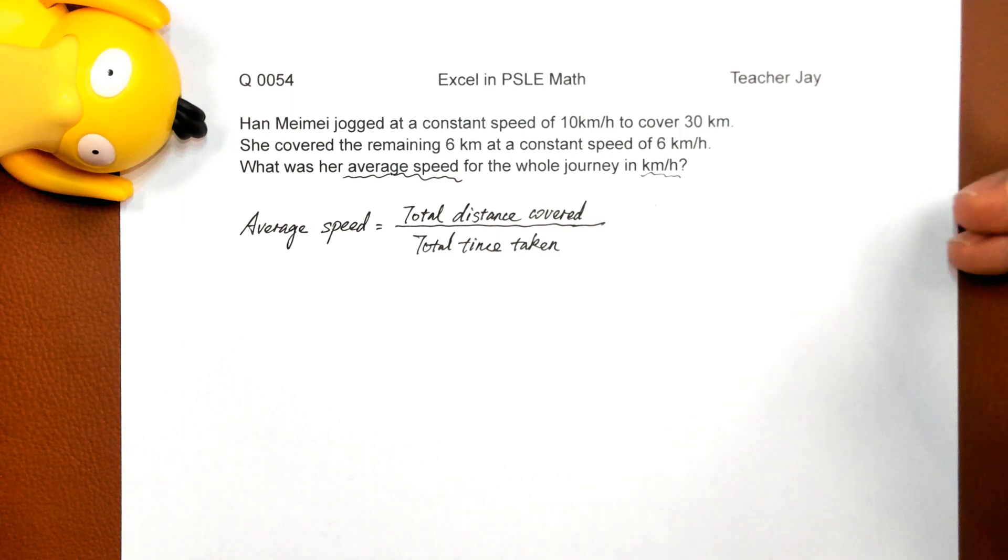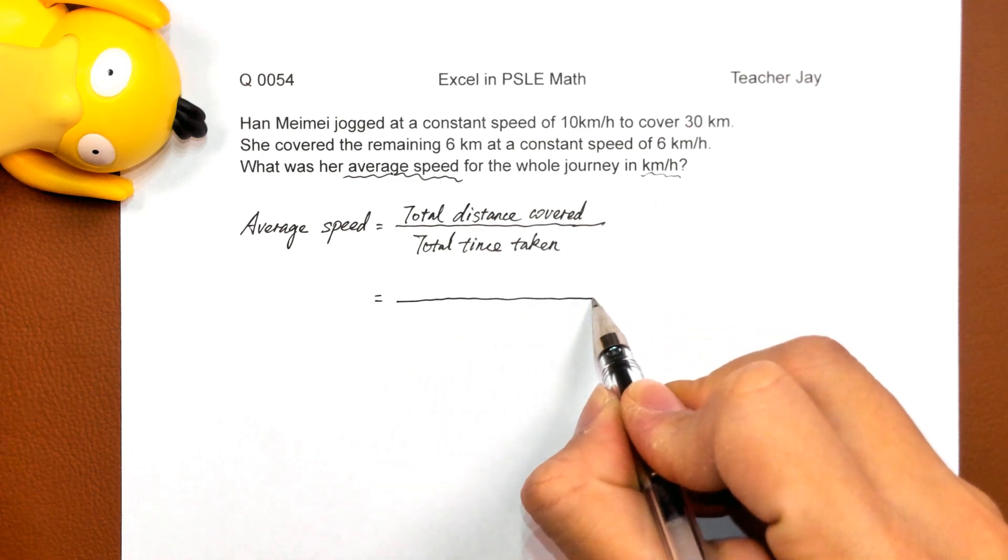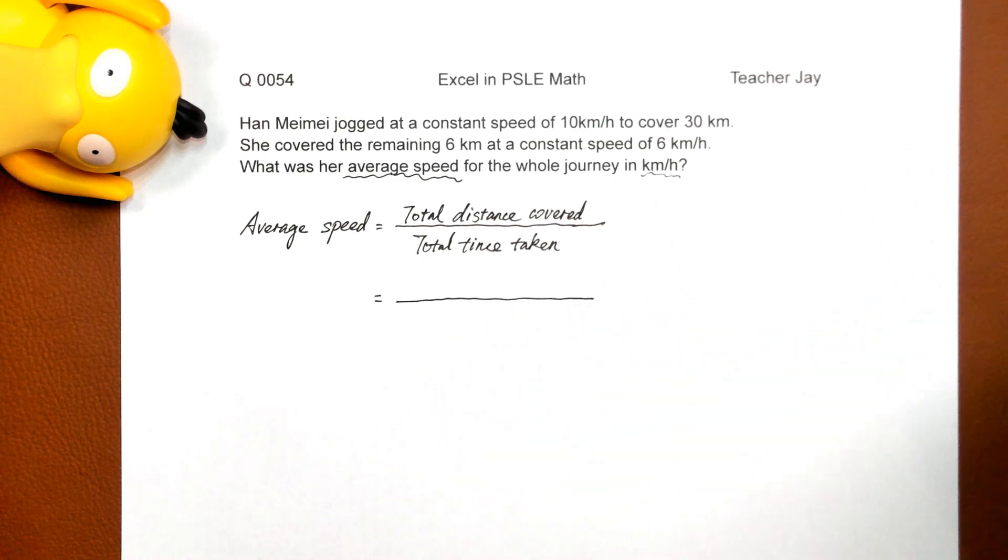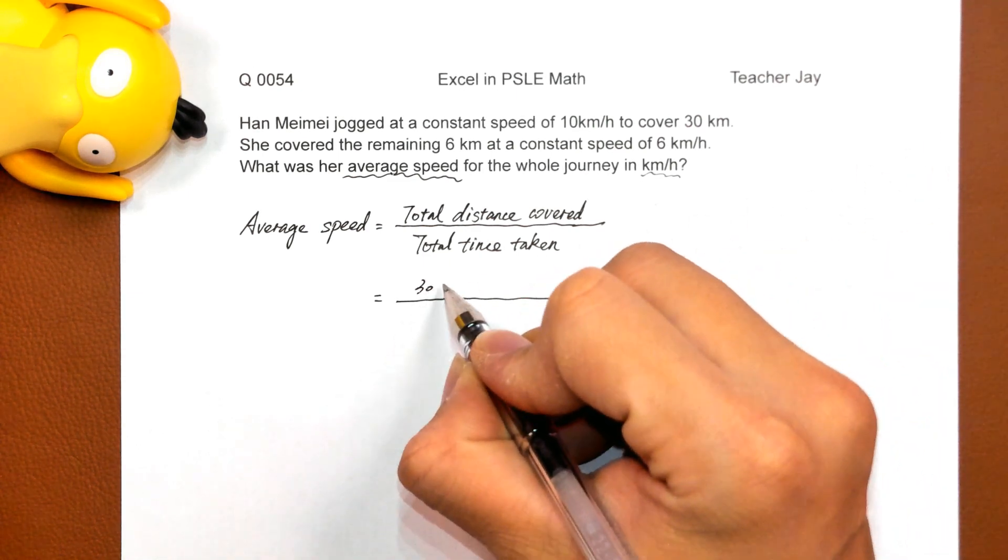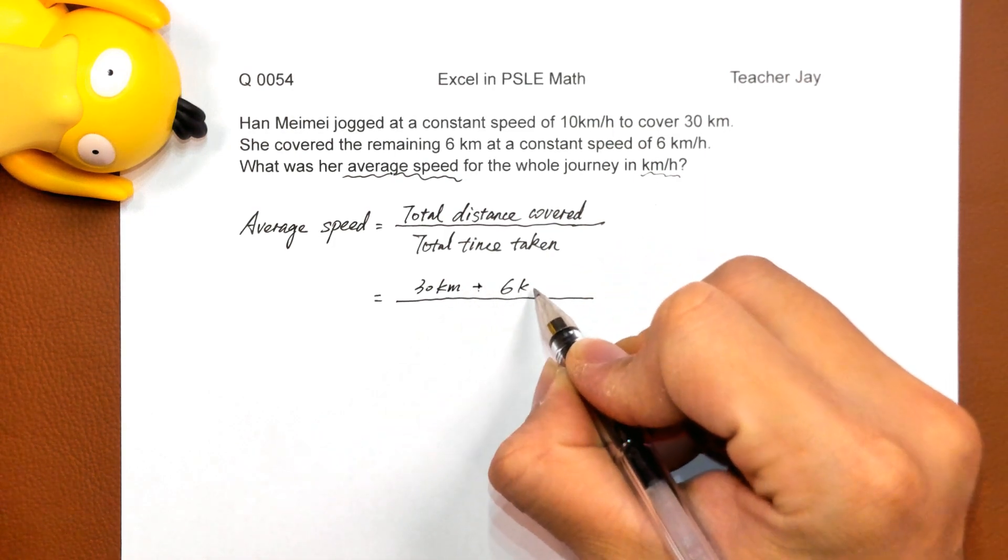也要被算进去。所以说我们现在就要来看了。那我们这样子的总路程是什么? Total distance covered, 30 kilometers plus the remaining six kilometers.